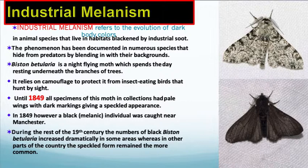Industrial melanism refers to the evolution of dark body colors in animal species that live in habitats blackened by industrial soot. The phenomenon has been documented in numerous species that hide from predators by blending in with their backgrounds. Biston betularia is a night-flying moth that spends the day resting underneath the branches of trees, relying on camouflage to protect it from insect-eating birds. Until 1849, all known specimens had pale wings with dark markings giving them a speckled appearance that helped them camouflage with their tree. In 1849, a black individual was caught near Manchester. During the rest of the 19th century, the numbers of black moths increased dramatically in some areas, whereas in other parts of the country the speckled form remained more common.